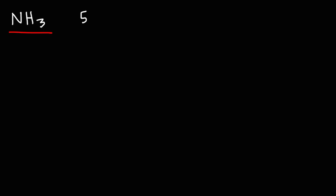Nitrogen has five valence electrons. How do we know this? Well, if you look at the periodic table, you'll find that nitrogen is in group 15, or group 5A, of the periodic table. Hydrogen is in the first group, so it has one valence electron, but there are three of them, so we've got to multiply that by three. Five plus three is eight, so ammonia has eight valence electrons.